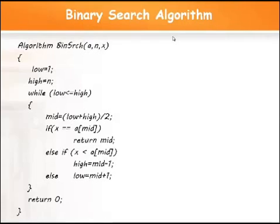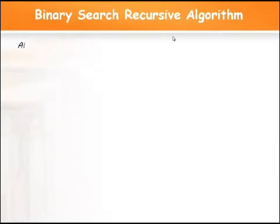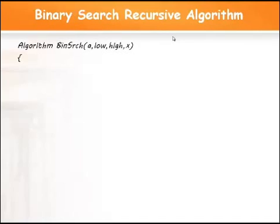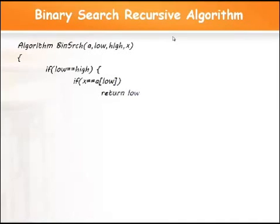We can also write a binary search algorithm using recursion. In the recursive algorithm, we take A as the array, low as the lower index, high as the higher index, and X as the element to be searched. If there is a single element (low equals high), we compare X with A[low]. If equal, return low (the position); if not equal, return 0.